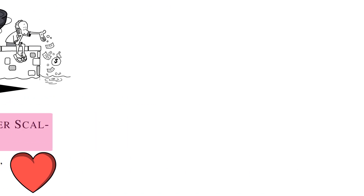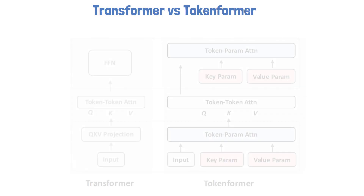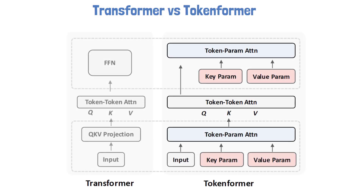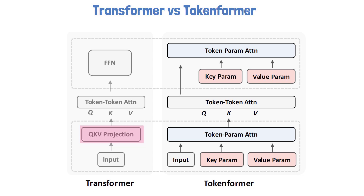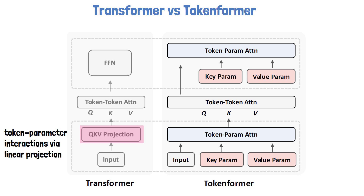Let's start with a high-level comparison between the transformer architecture and the Tokenformer architecture using a figure from the paper. On the left we have a simplified view of the original transformer architecture. Given an input sequence of tokens at the bottom, we first pass the input via a linear projection block to calculate the inputs for the attention block — the matrices Q, K, and V. In this phase we have interactions between the model parameters and the input tokens, which are calculated using a linear projection.